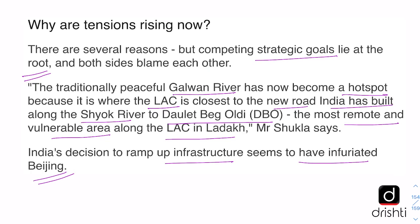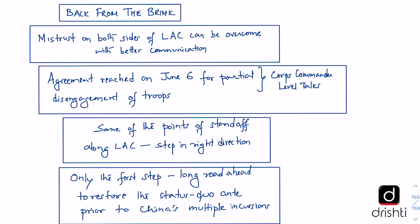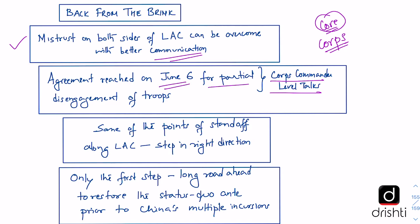The editorial says there is a sense of mistrust on both sides of the Line of Actual Control that can only be overcome with better communication. A successful corps commander level meeting was held on 6th June — note that 'corps' is spelled C-O-R-P-S but pronounced 'core.' The two sides agreed to a partial disengagement of troops from some standoff points along the LAC. The editorial says this is a step in the right direction, but only the first step, and there is a long road ahead.